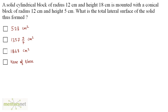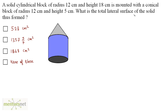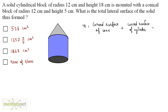A solid cylindrical block of radius 12 cm and height 18 cm is mounted on a conical block of radius 12 cm and height 5 cm. What is the total lateral surface of the solid formed? The total surface area equals the curved surface area of the cone, plus the curved surface area of the cylinder, plus the area of the base of the cylinder.